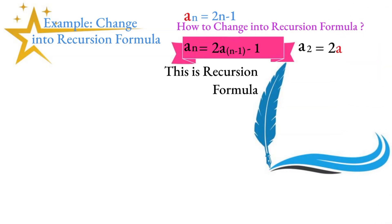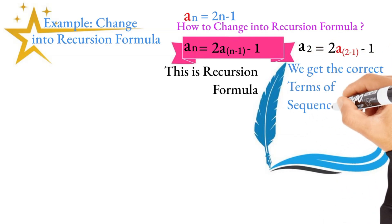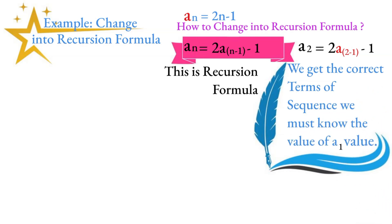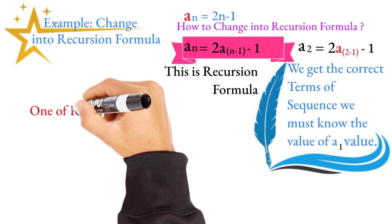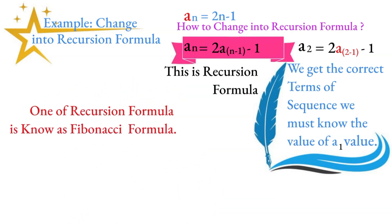For a2, we compute 2 times a(2-1) minus 1, which is 2 times a1 minus 1. The answer for a2 minus a1 minus 1 gives us the recursion formula. The recursion formula allows you to find the next term from the previous one.